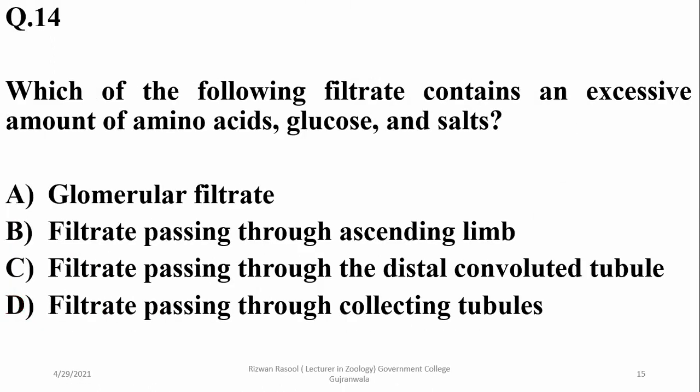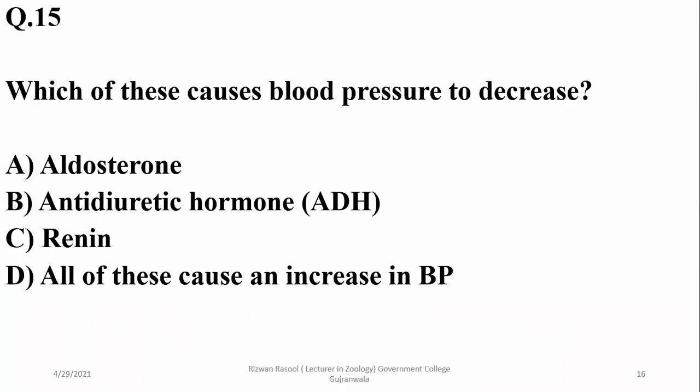Which filtrate contains an excessive amount of amino acids, glucose, and salts? These are abundantly present in glomerular filtrate in the PCT. As the glomerular filtrate moves down the nephron, the majority of these substances are absorbed along the length of the nephron, so alpha is the right answer.